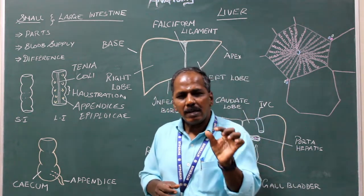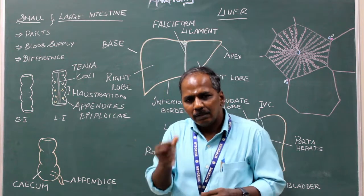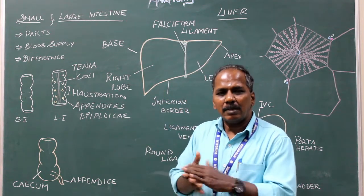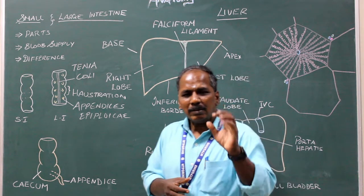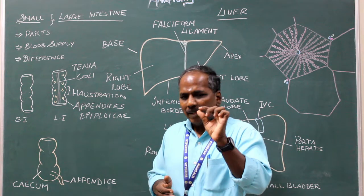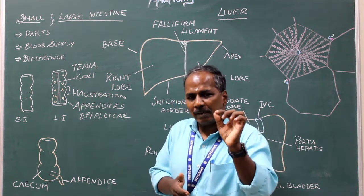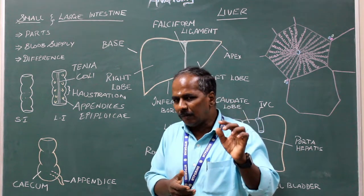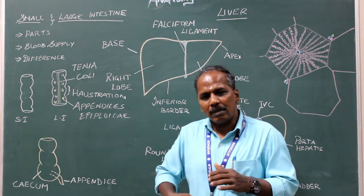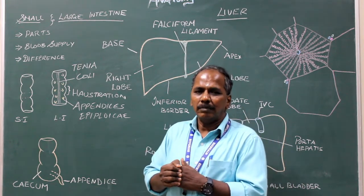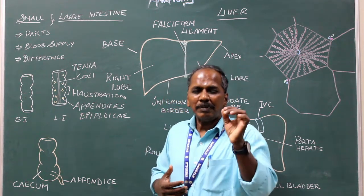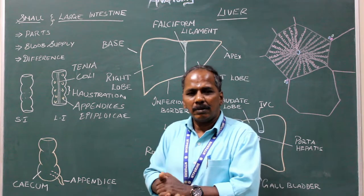The duodenum is a C-shaped organ or tube which is attached to the posterior abdominal wall. It is the widest part of the small intestine. On its center there is an opening formed by the union of the pancreatic duct and common bile duct, which opens into the second part of the duodenum. The concavity of the duodenum is related to the pancreas.